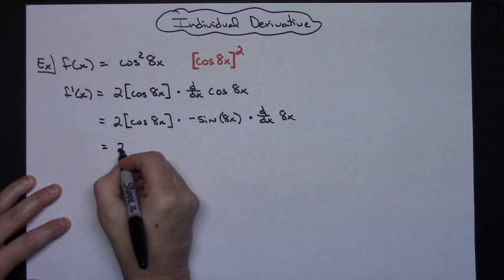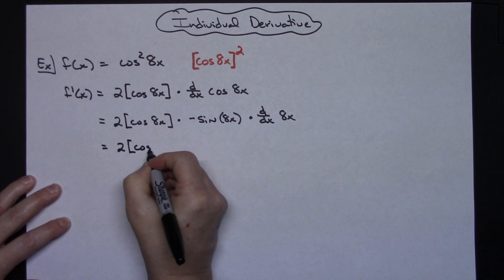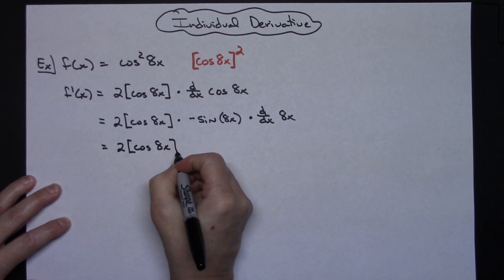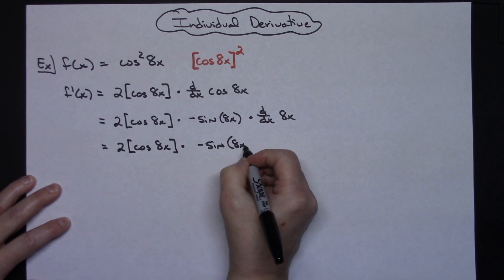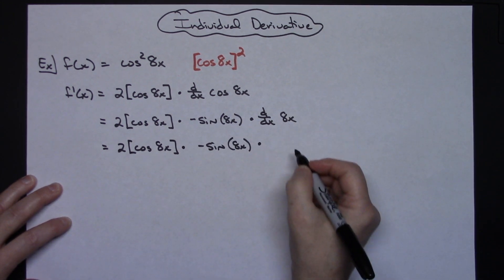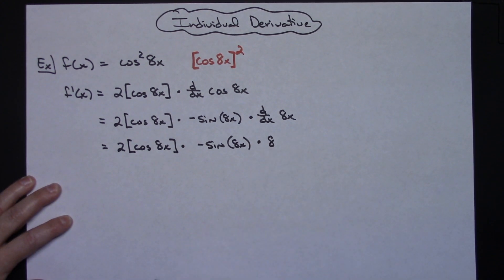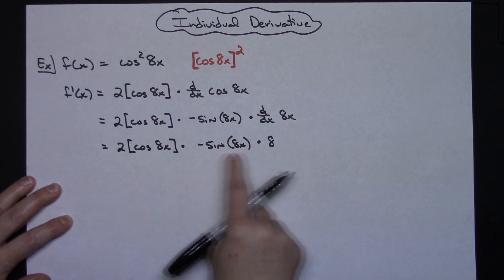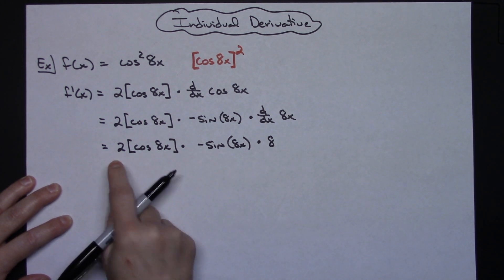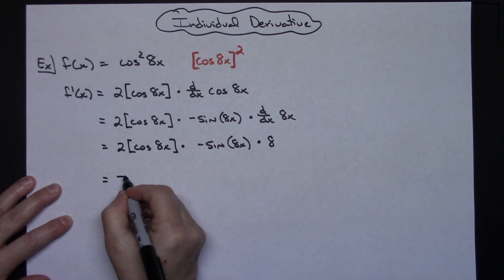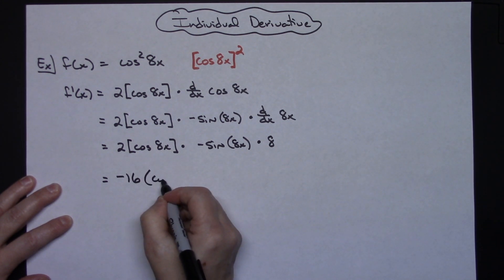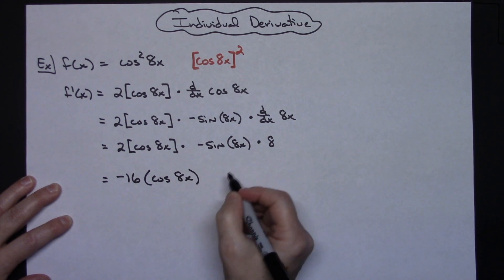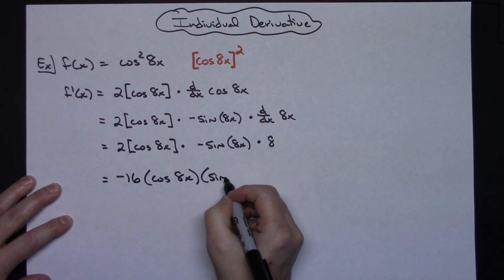I'm going to keep everything the same, just rewriting until I get down to that final derivative. The derivative of 8x is just going to be an 8. At this point I'm just going to clean everything up. We'll do 8 times negative times 2, which gives a negative 16 out in front, and then we have cosine of 8x times sine of 8x.